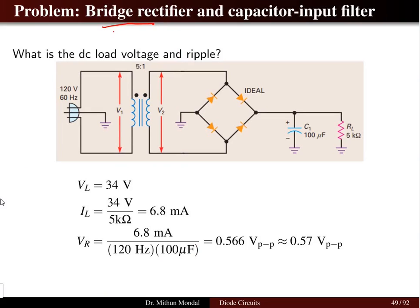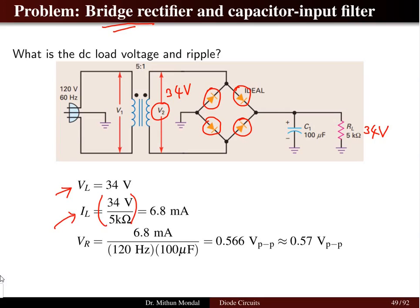If the rectifier is a full wave bridge rectifier, we have four diodes. The voltage V2 is 34 V — the same as in the half wave rectifier, not halved as in the center tap case. This 34 V appears across the load resistor, and the current is 34 V / 5 kΩ = 6.8 mA. The ripple voltage, computed from current divided by frequency times capacitance, with a frequency of 120 Hz, gives approximately 0.56–0.57 V.